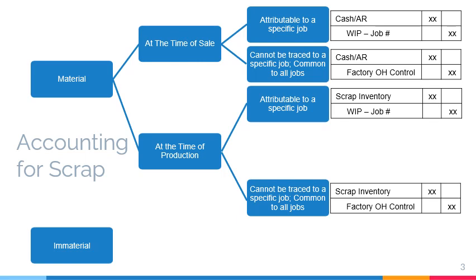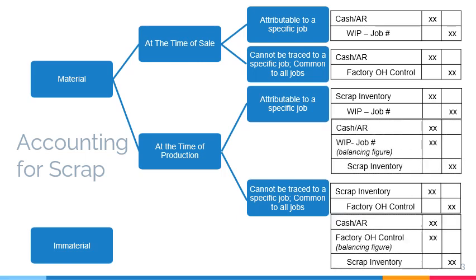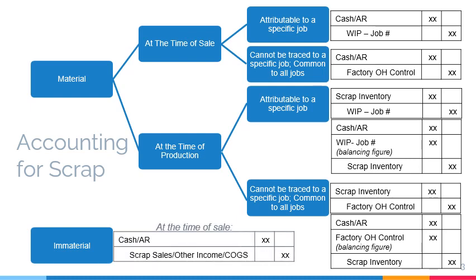If scrap is traceable to a specific job, it is recorded as a deduction from or a credit to the job's work in process. Otherwise, it is recorded as a credit to factory overhead control. The difference between the recorded amount and the price realized on the sale of scrap is adjusted to the account credited at the time of production. When scrap is considered immaterial, it is simply credited to sales, other income, or cost of goods sold at the time of sale.